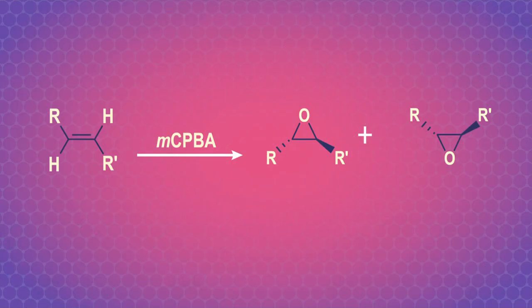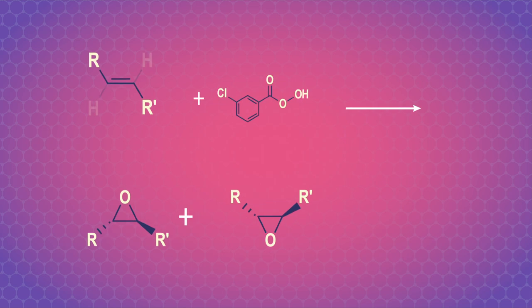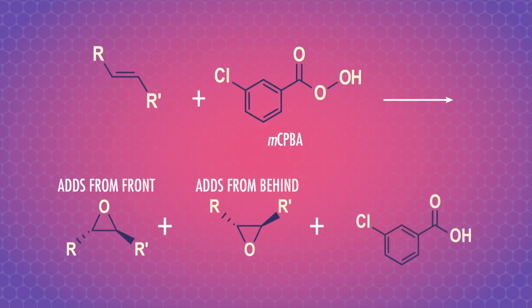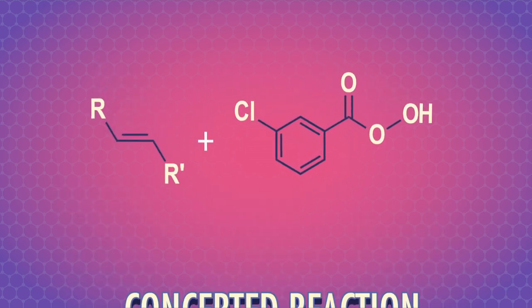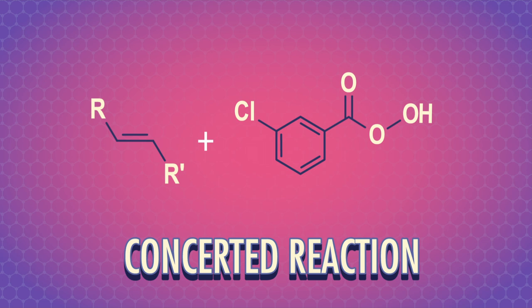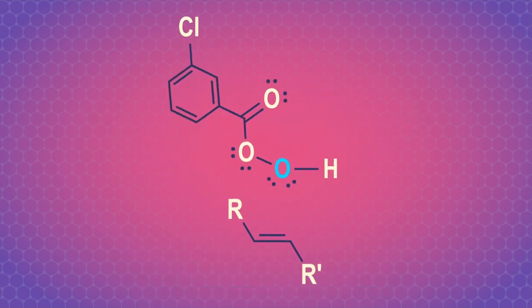You might see this reaction written out in a simplified way, but if you draw everything out, you can see how MCPBA transfers one of its oxygen atoms in the process. To answer our other questions, we need to look at the reaction mechanism. Like hydroboration, we have another concerted reaction that happens all at once, so there's a lot of electron pushing to help us get to the transition state. This reaction has some of the most complex arrow pushing we'll see in a one-step organic reaction.